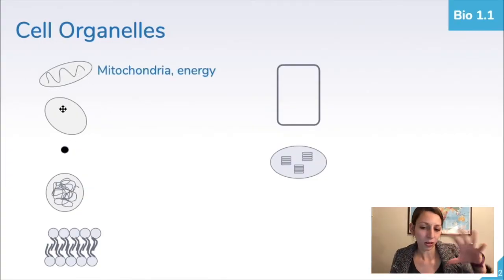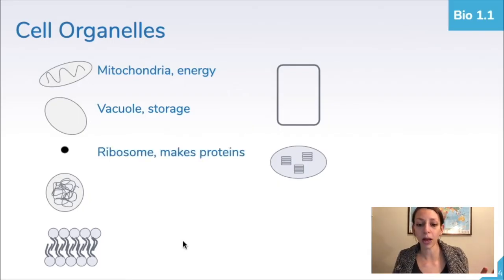Here are simple circles with kind of a blank space in them. That would be a vacuole, which again is for storage. Our ribosomes are represented by little dots, and this is where proteins are made.